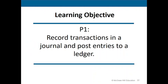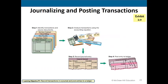Let's talk about recording transactions in our journal and posting those entries to a ledger. Back to our accounting cycle: step one is to identify transactions through source documents; step two is to analyze those transactions to see what effect, if any, they have on the accounting equation; and if they have an effect, in step three we record the transaction in a general journal.